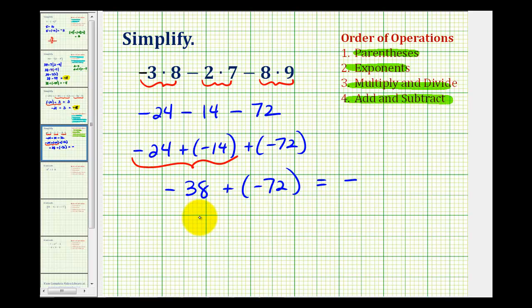So if we add their absolute values, we'll have to add 38 and 72, which would be 110. But we know our sum has to be negative, so this simplifies to negative 110.